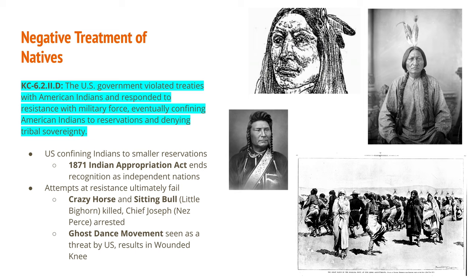The Ghost Dance Movement was a pan-Indian movement not limited to one tribe. Many adopted this movement — it was really a vision that one day the white settlers would go away and the land would be restored to American Indians in North America, and that's why they danced. This was seen as a threat by the U.S. Army, and it was one of the factors that resulted in the Wounded Knee Massacre, as the Dakota Sioux being pursued were in the midst of a Ghost Dance when the federal Army opened fire.